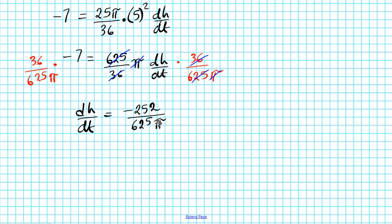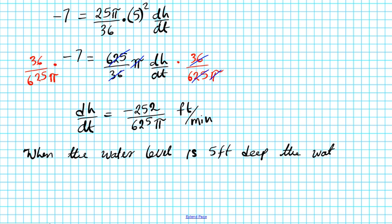So the question is as follows. What is the unit of measure? What is the measure of height? h is in height is in feet. So feet is feet. dt is the measure of time, and this problem is minutes. So this is the rate at which the height is falling when the height is 5 feet deep. So we can write it down. When the water level is 5 feet deep, the water level is falling. Falling is negative. It's falling at 252 over 625 pi feet per minute. So there you have it.